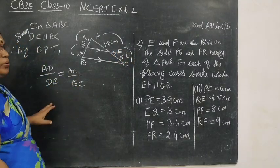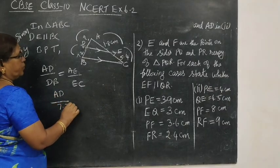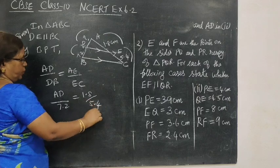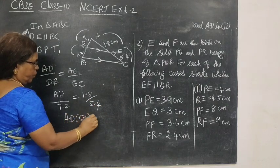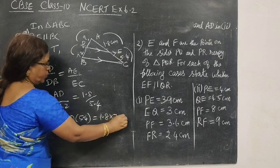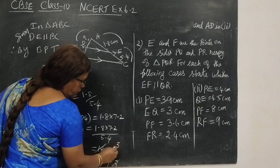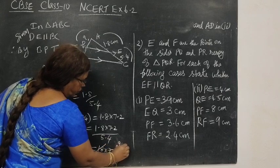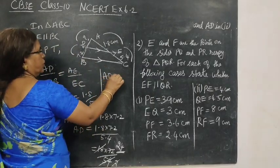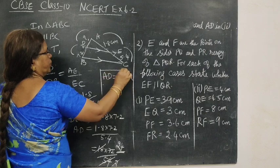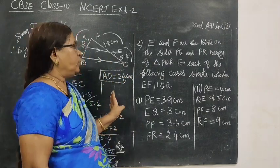By BPT AD by DB equal to AE by EC. Now, substitute the numbers. AD we do not know, then DB 7.2, 1.8, 5.4. Cross multiply AD into 5.4 equal to 1.8 into 7.2. Therefore AD, you cancel 3, 2, 0, 6, balance 1, 4, 24. AD equal to 2.4 cm. We have applied basic proportionality theorem and found the answer.